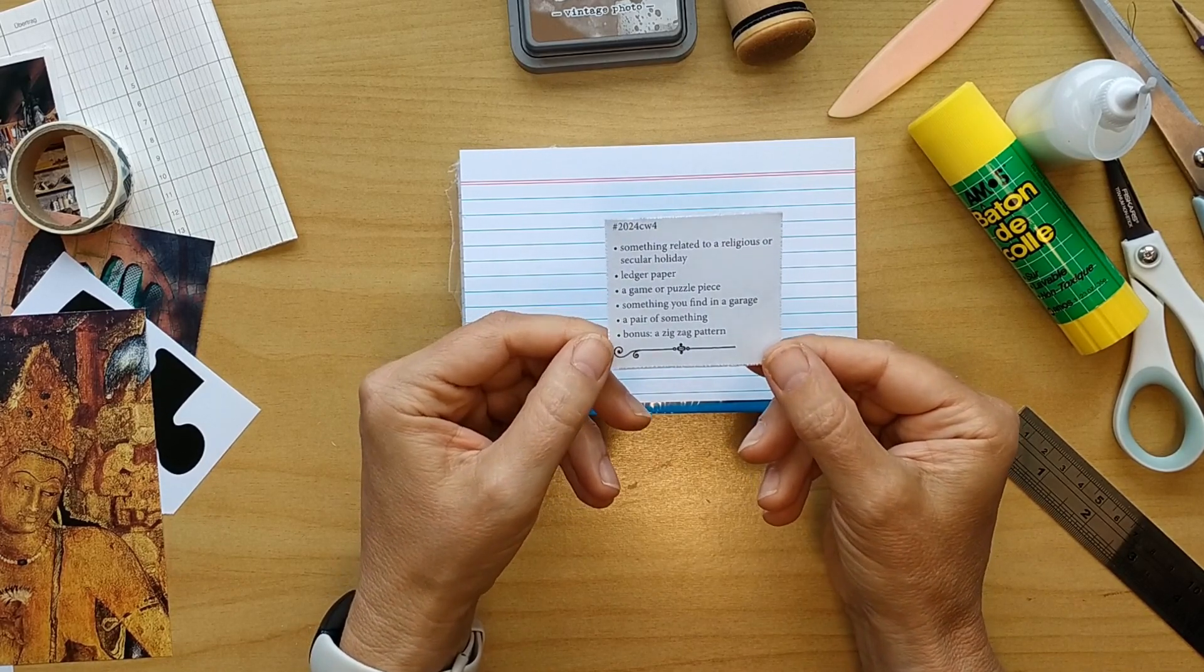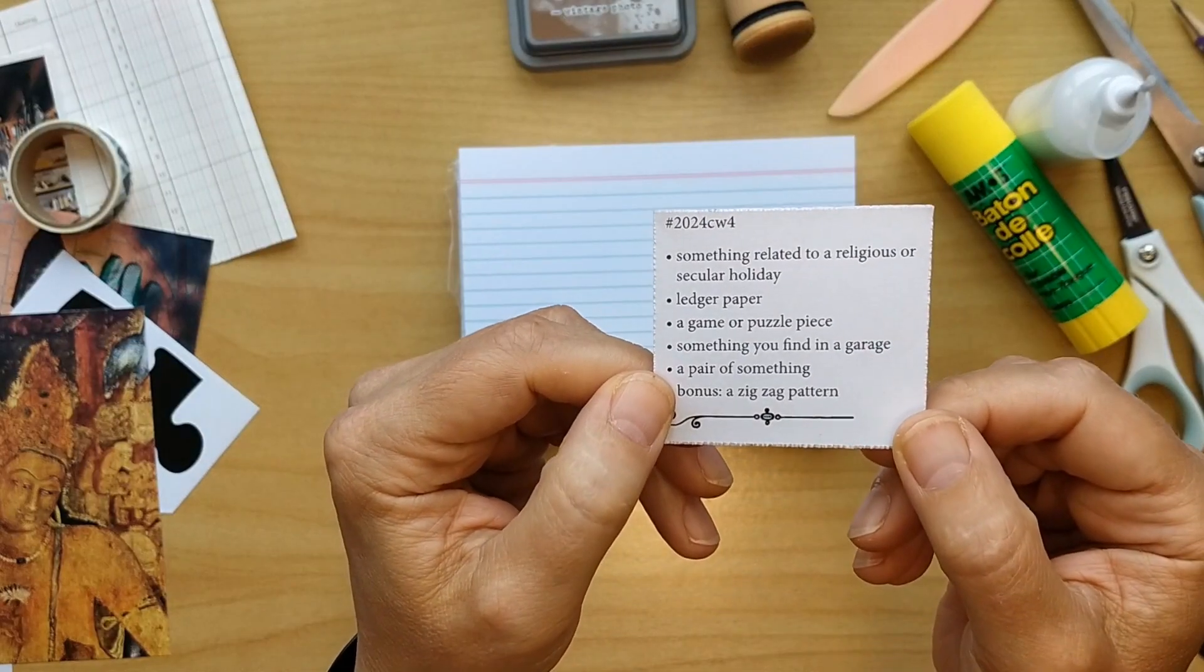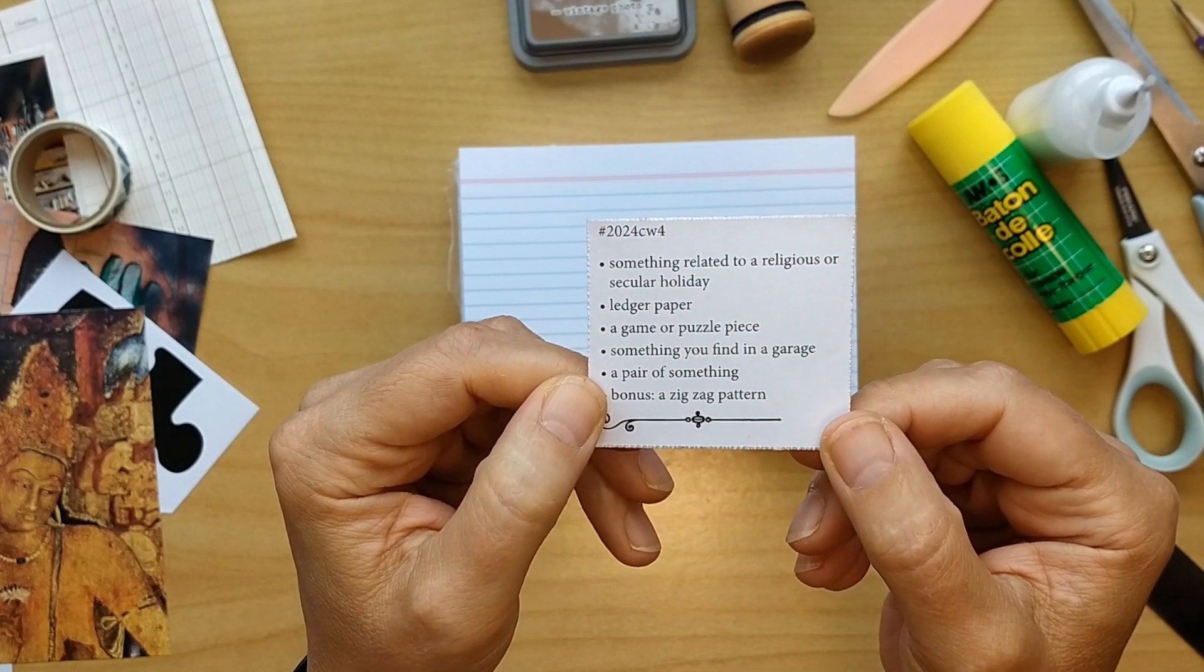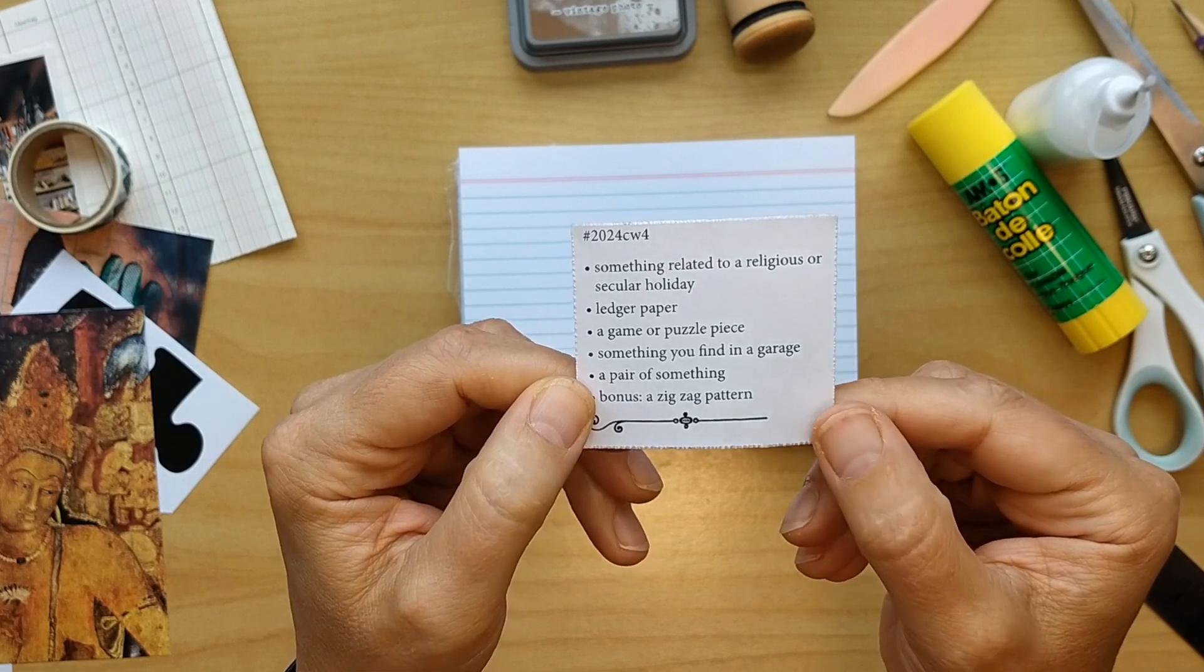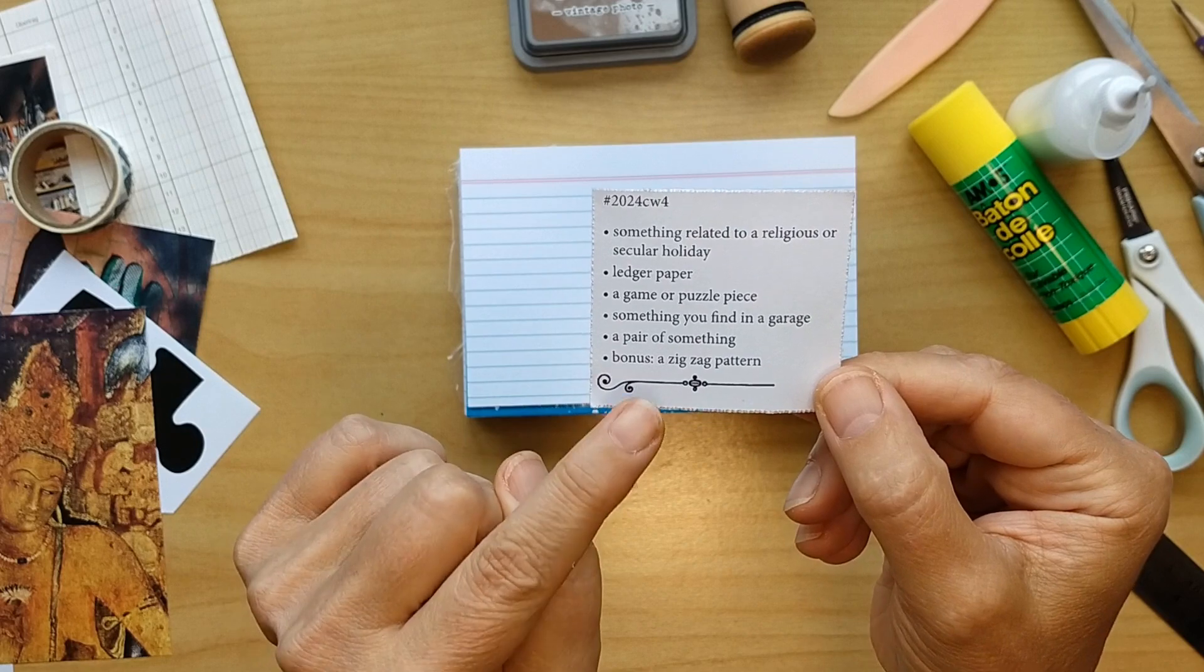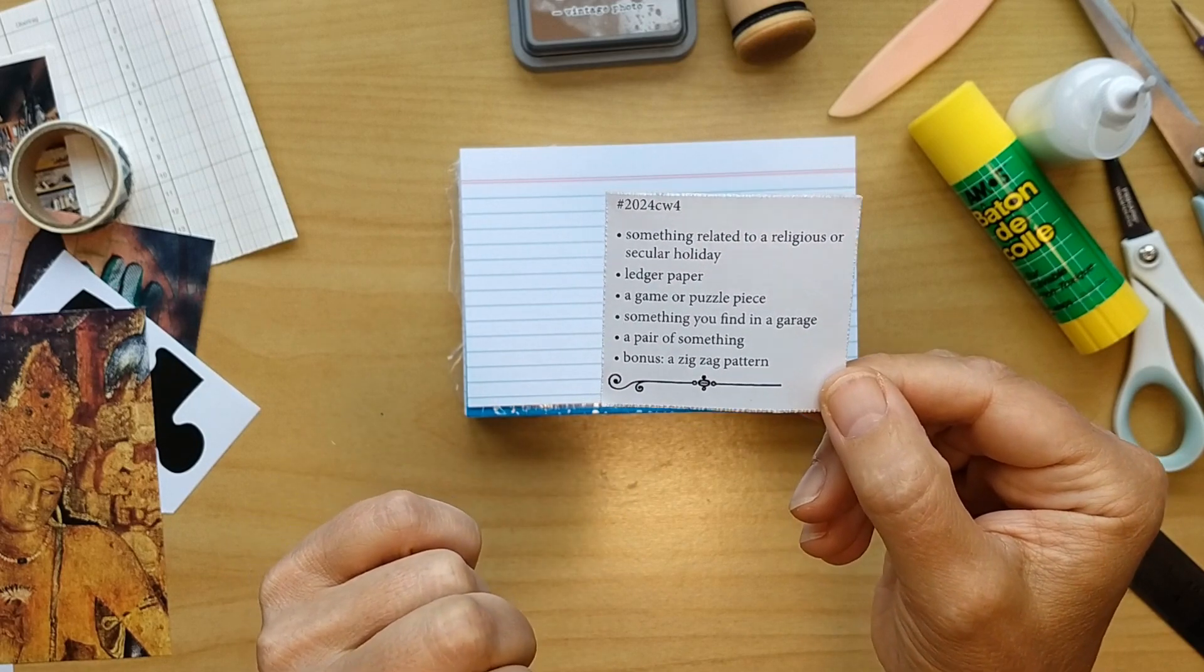And these are Margaret Miller's prompts for the fourth week. Something related to a religion or secular holiday, ledger paper, a game or a puzzle piece, something you find in a garage, a pair of something and as a bonus a zigzag pattern.